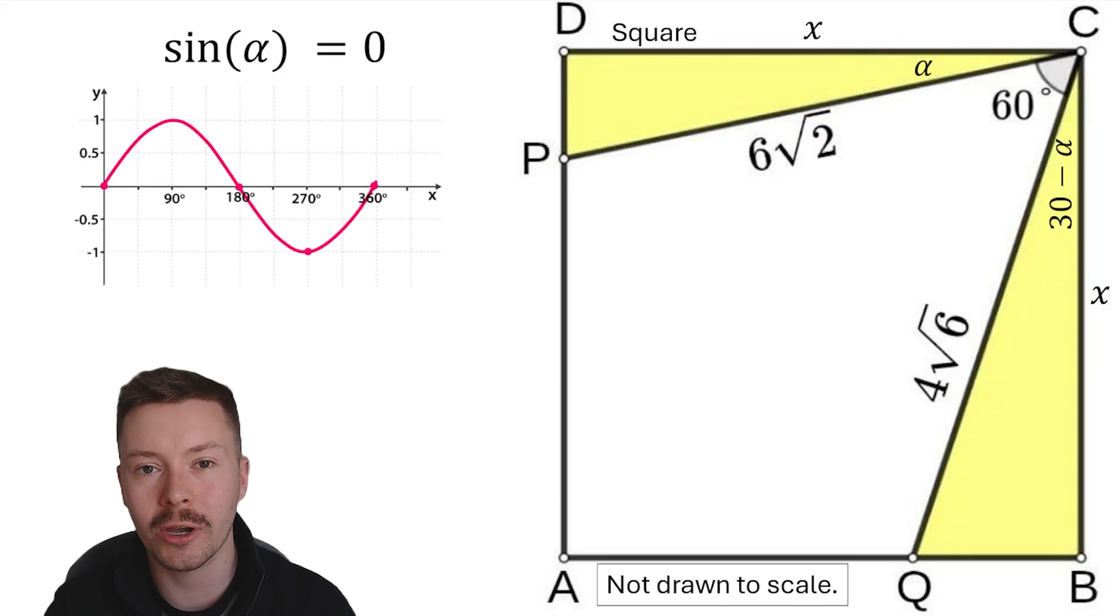Now looking at the sine curve, the sine graph here, alpha can only be between 0 and 30 at most. The only solution we've got here for having sine of the value being 0, that means essentially the height of that curve being 0, is 0. So that means alpha is 0.